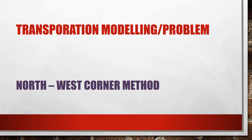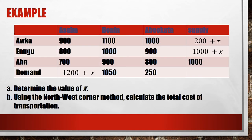We'll use the northwest corner method to obtain a basic feasible solution to the transportation problem. Here on the screen we have a transportation problem with demands, supplies, and towns where we are doing business. The transportation is ongoing from Orca, Enugu, and other suburbs. Let's say we are supplying yams. Our first task is to determine the value of x in the problem, and then use the northwest corner method to calculate the total cost of transportation.